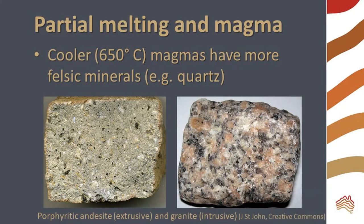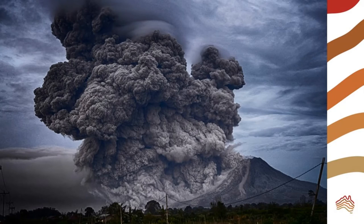Cooler magmas have more light-colored felsic minerals in them, as these melt at a lower temperature. The rocks are lighter in color due to the high felsic mineral content, and this also affects the volcanic eruptions. Felsic magmas do not flow well and they trap gases. This leads to explosive eruptions.